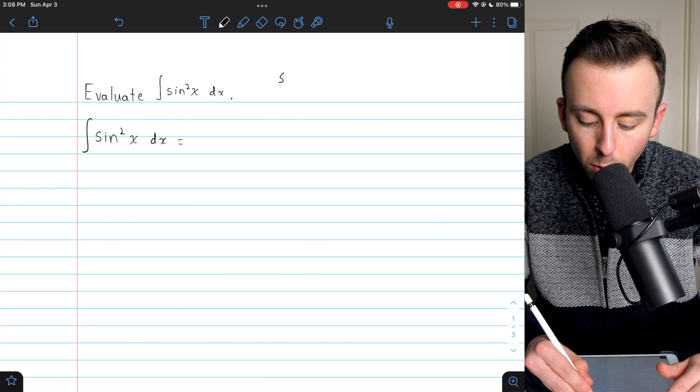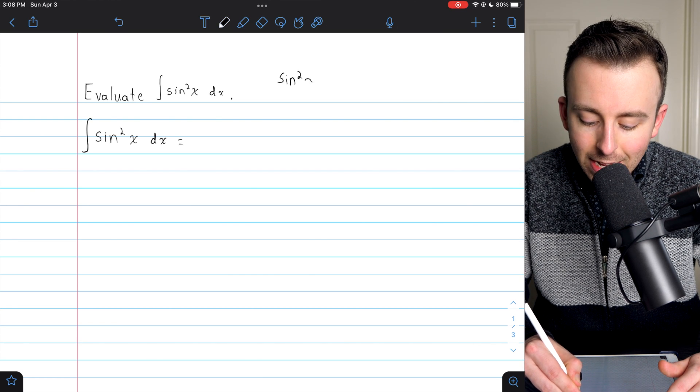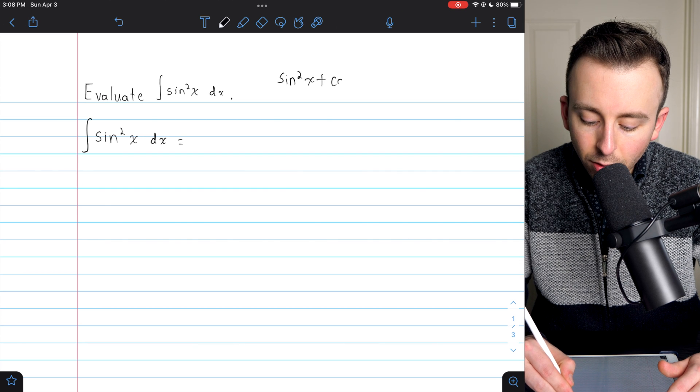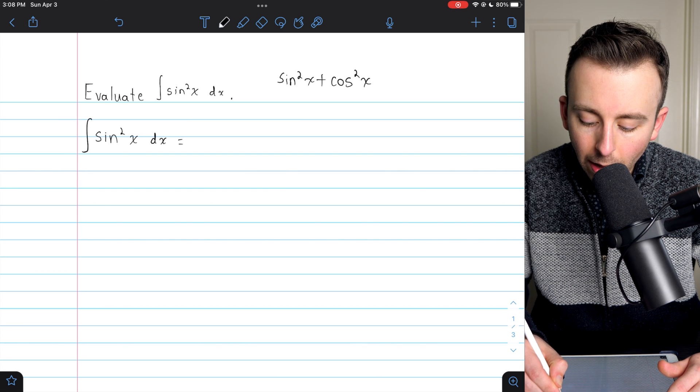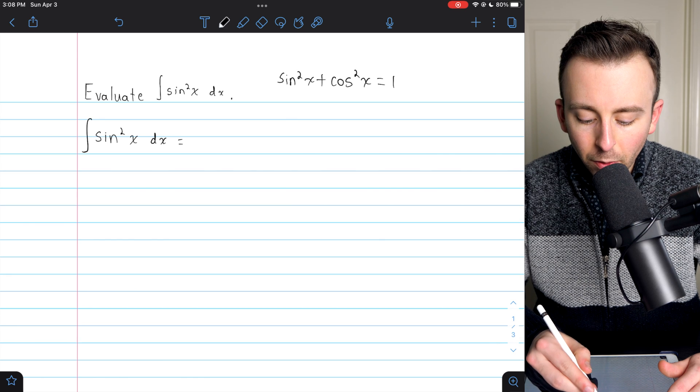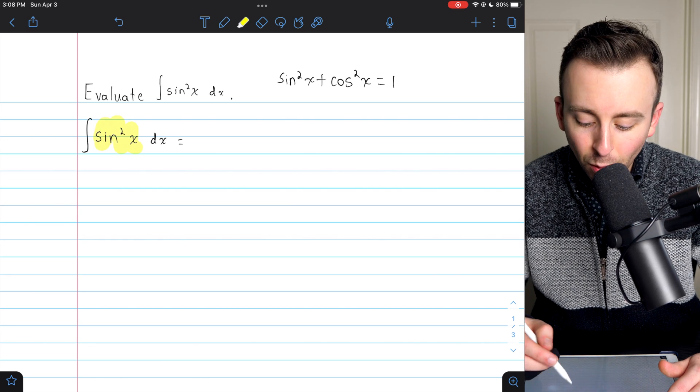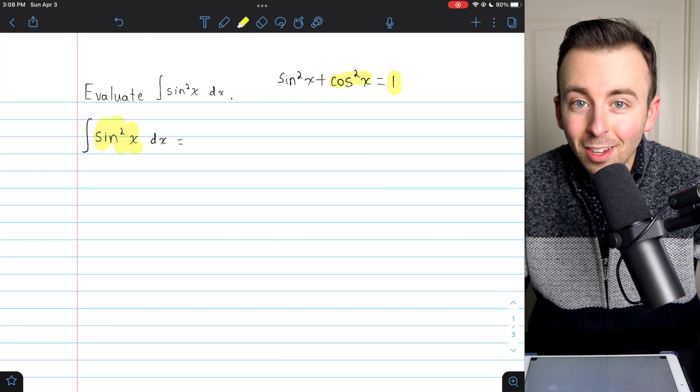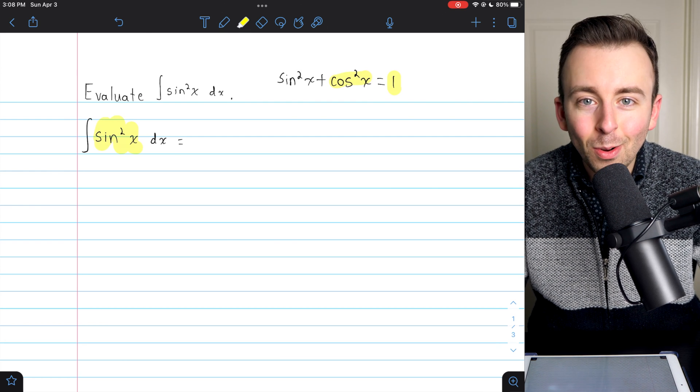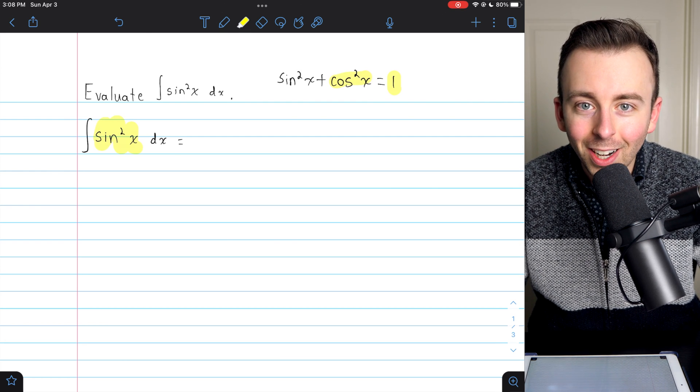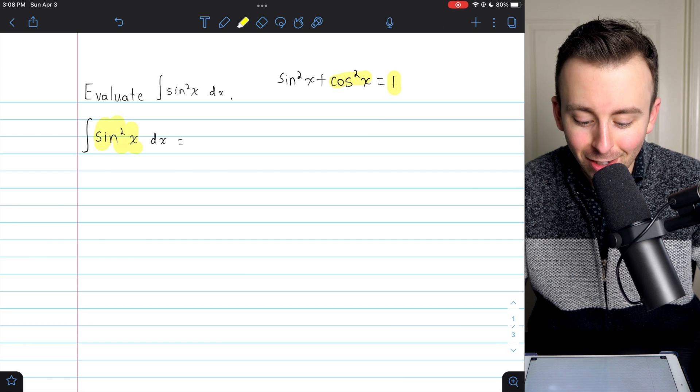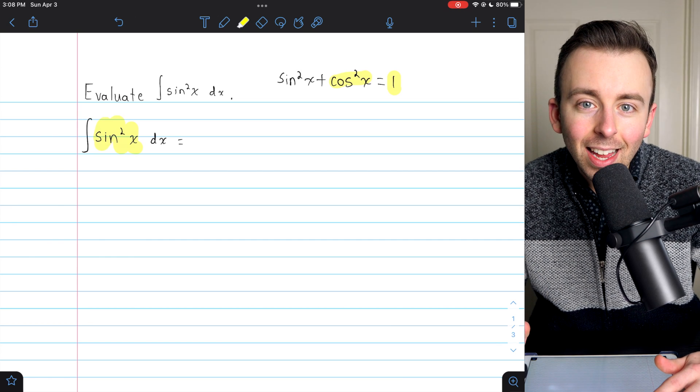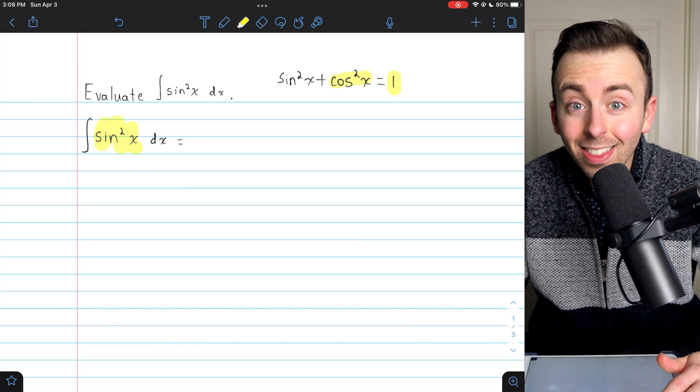Your mind might first go to the classic Pythagorean identity that sine squared plus cosine squared equals one, but if we replace sine squared with one minus cosine squared, we'll be in the same situation just with cosine squared instead of sine squared, and that doesn't seem any easier. We will need this identity, but all on its own, it's not that useful.